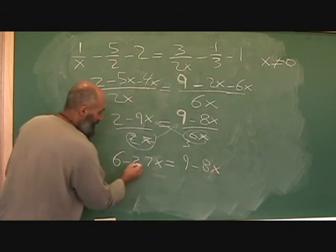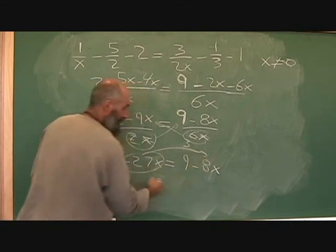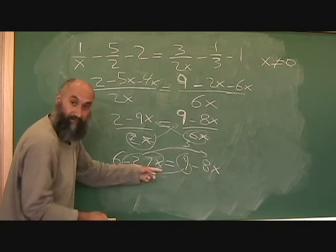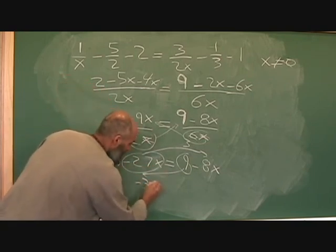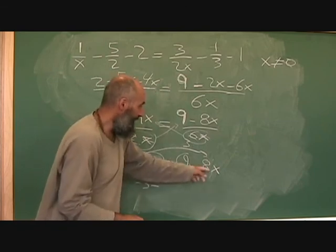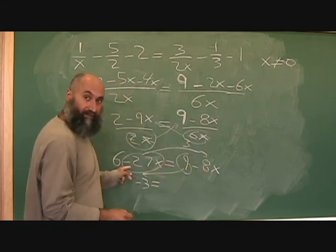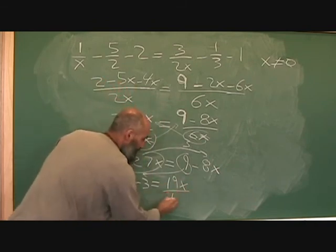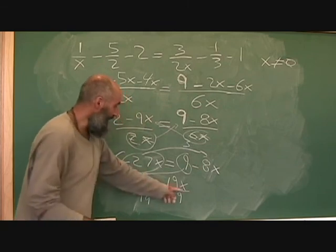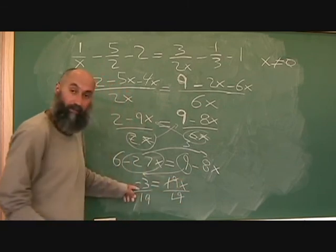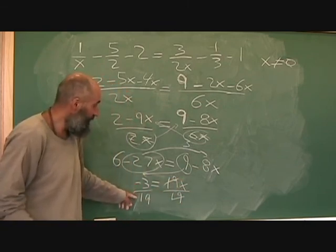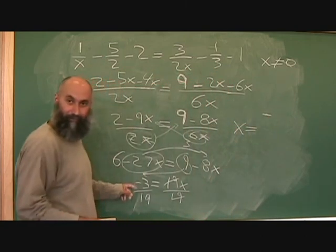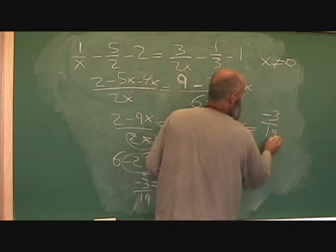So you bring your terms over. So this guy comes over, it becomes plus 27x. That guy goes over, it becomes minus 9. So 6 minus 9 is going to be negative 3. Negative 8x plus 27x is going to be 19x. And divide by 19. So x is going to be equal to negative 3 over 19. Negative 3 over 19. And that's our solution using cross multiplication.